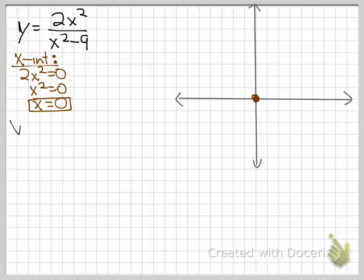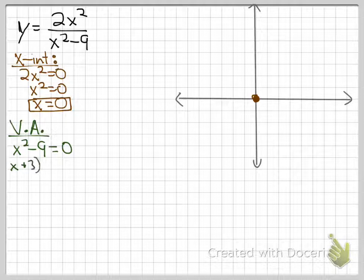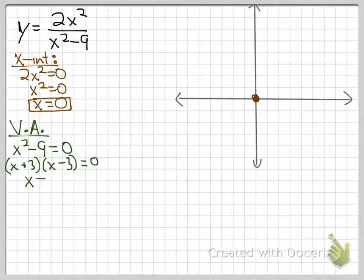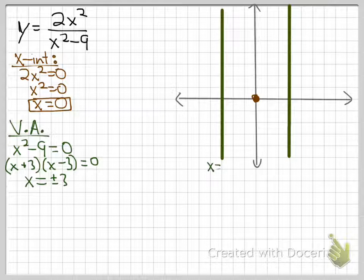For vertical asymptotes, we set x squared minus 9 equal to zero. We factor to get (x plus 3)(x minus 3) equals 0, so our vertical asymptotes are at x equals plus or minus 3. We draw those on the graph and label them. We know the graph hits the origin and won't cross those vertical asymptote lines.